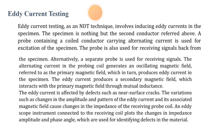The eddy current is affected by defects such as near-surface cracks. Variations in the amplitude and pattern of the eddy current and its associated magnetic field cause changes in the impedance of the receiving probe coil. An eddy scope instrument connected to the receiving coil plots the changes in impedance amplitude and phase angle, which are used for identifying defects in the material.